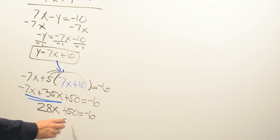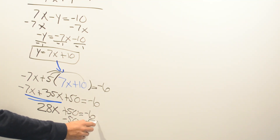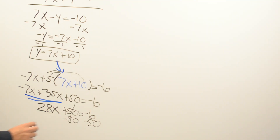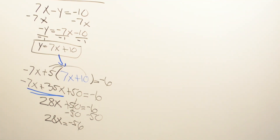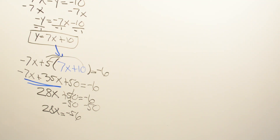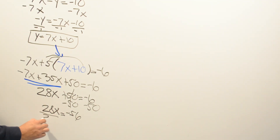We subtract 50 from both sides to get 28x equals negative 56. This becomes a one-step equation. To isolate x, we divide both sides by 28, giving us x equals negative 2.